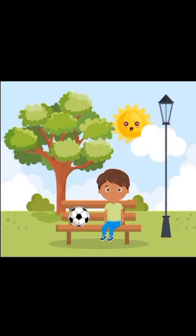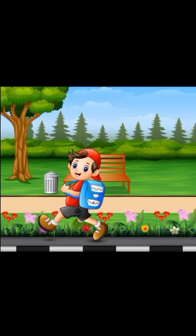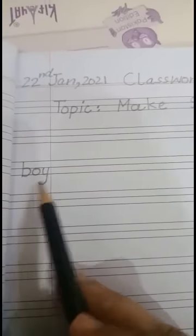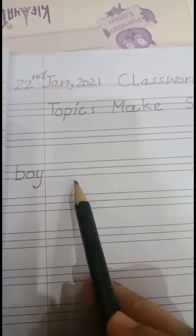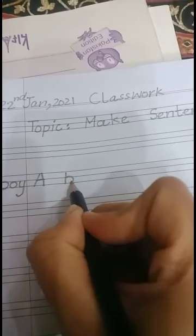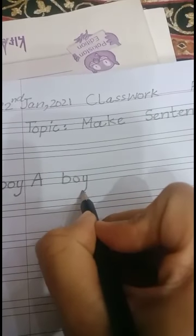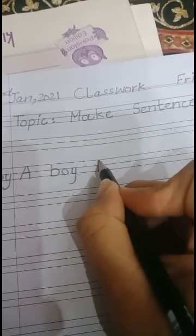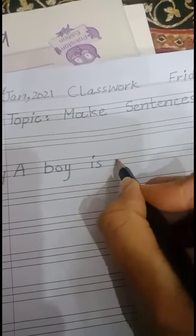Look here. A boy has a football. And you can write this boy is looking sad. Look here, in this picture you can write a boy is going to school. Now I hope you all can make different sentences by using this word boy. So I am going to write here my own sentence and that is: A boy is running.